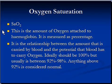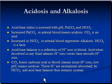Oxygen saturation is the amount of oxygen attached to hemoglobin, measured as a percentage. It represents the relationship between the amount of oxygen carried by the blood and the potential capacity of the blood to carry it. It should ideally be 100 percent, but is usually between 92 and 98 percent. Anything above 92 percent is considered normal.